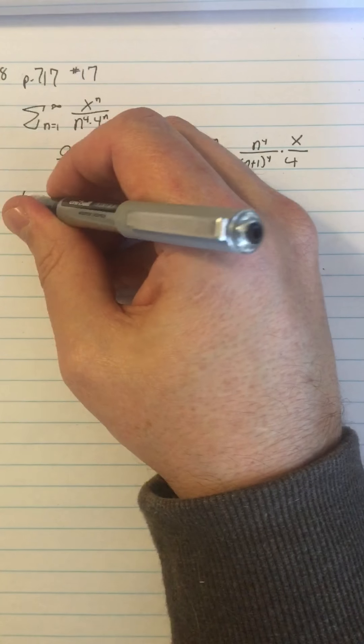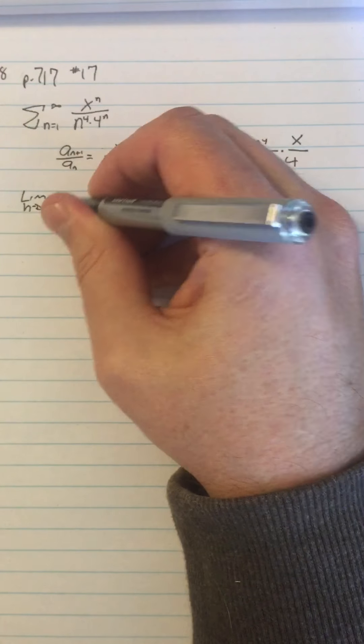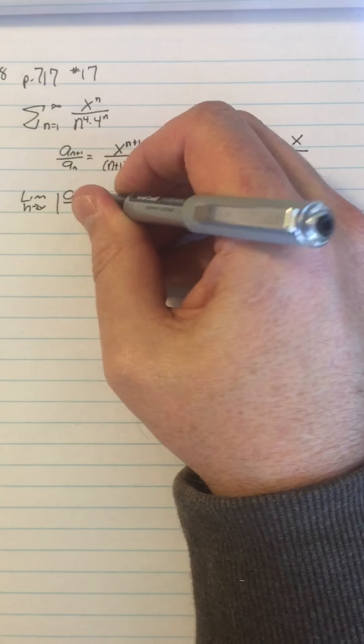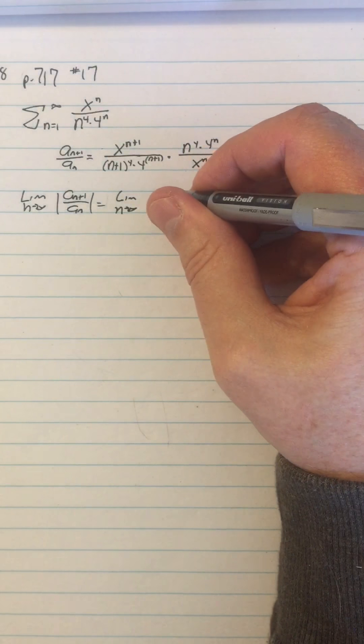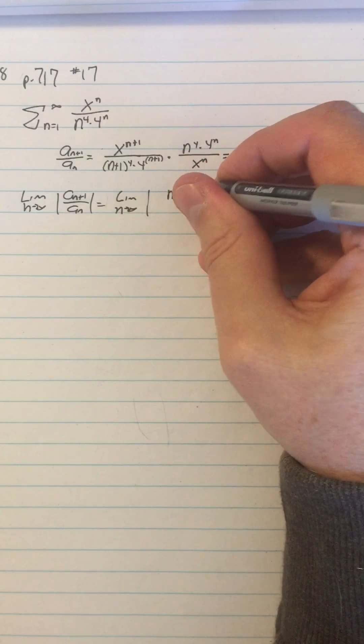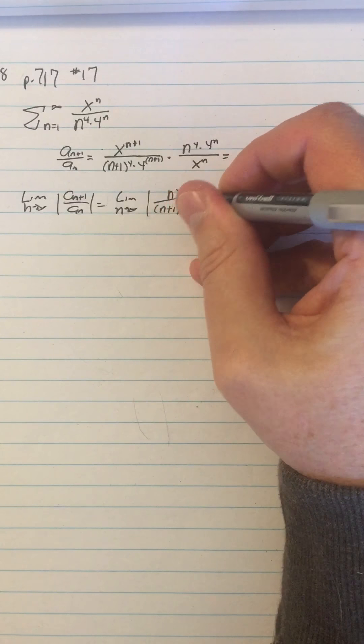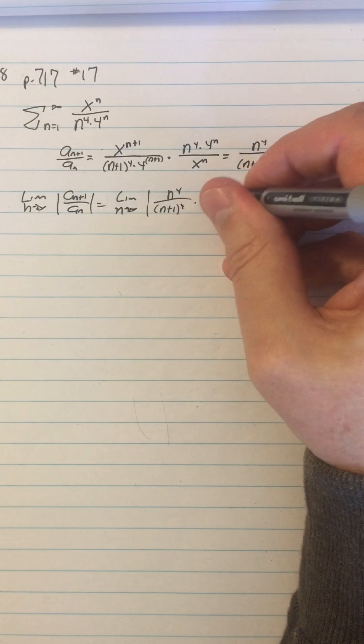So now I can say the limit as n approaches infinity of the absolute value of a sub n plus 1 over a sub n is equal to the limit as n approaches infinity of n to the fourth over (n+1) to the fourth times x over 4.